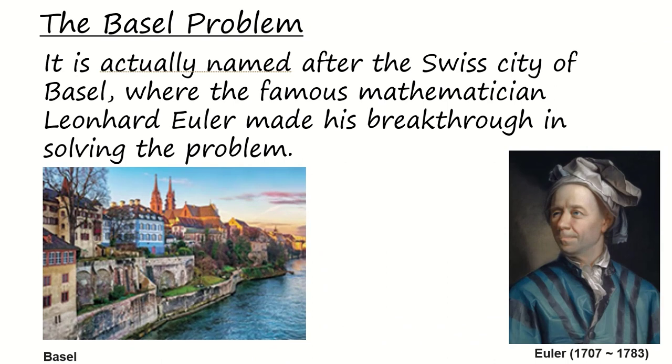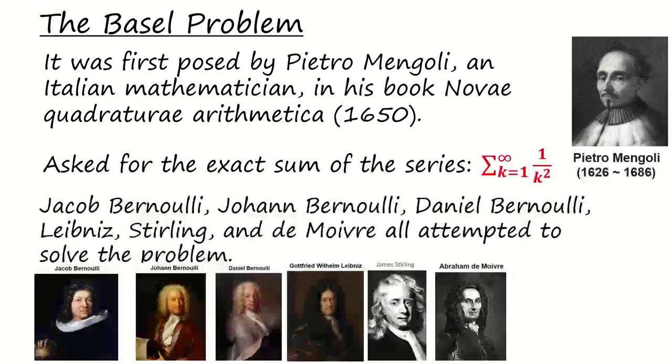The Basel problem is actually named after the Swiss city of Basel, where the famous mathematician Leonard Euler made his breakthrough in solving the problem. In fact, this problem was first posed by Pietro Mengoli, an Italian mathematician, in his book Novae Quadraturae Arithmeticae in 1650.